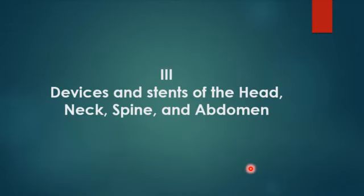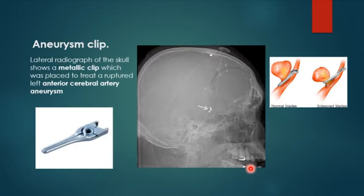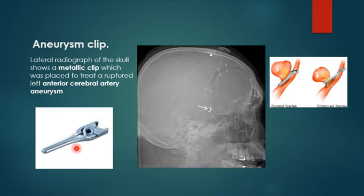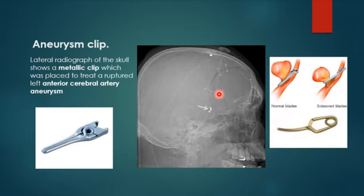Now we'll talk about devices and stents in adult patients outside the heart. Starting with aneurysmal clips: a patient with an anterior cerebral artery aneurysm undergoes surgical clipping. On lateral skull X-ray the clip is visible as a very small metallic clip. There are also clips from the removed portion of the skull, appearing in different shapes depending on how the aneurysm was clipped.